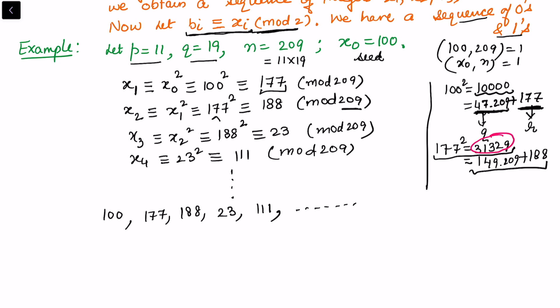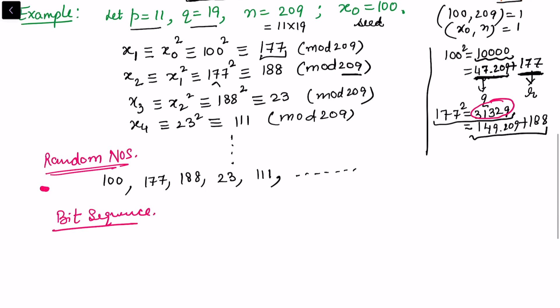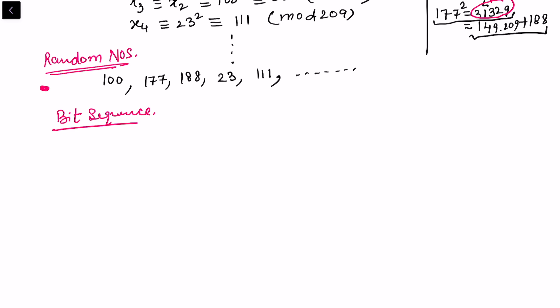So these are the random numbers that we have generated. Now suppose we further want to find the corresponding bit random numbers, so bit sequence. If the question is only about the random numbers we can stop here, but if you also want to know what is the bit sequence correspondingly, in that case we can see